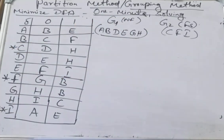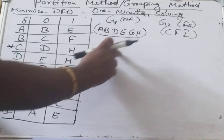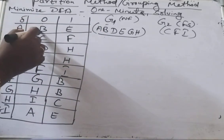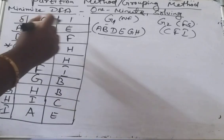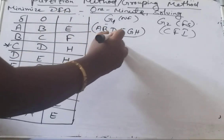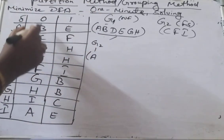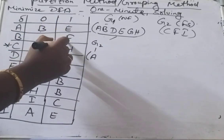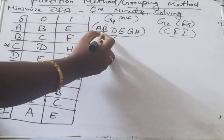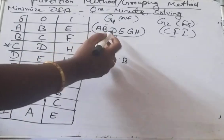Now check: can we partition the group A, B, D, E further based on whether on reading input 0 or 1 they move to G1 or G2? Observe A: on 0 it goes to B, on 1 it goes to E — both non-final, so it stays in the same group G1. Next check B: on 0 it goes to C and on 1 it goes to F. C and F are in group G2, so we partition B into a separate group.